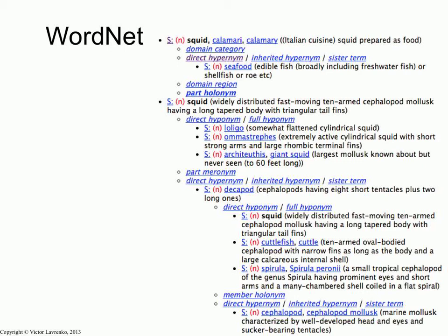So squid in WordNet has two entries. Here's the first entry. Here's the second entry. The first entry is related to the sense of squid as food. You can eat squid. So this is seafood. And the second sense talks about the animal.